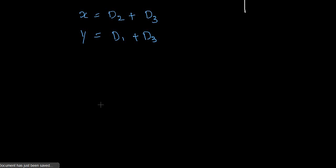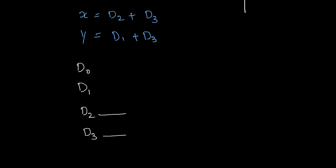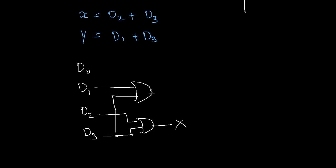I am going to implement this function using logic gates. I write the input data lines d0, d1, d2, and d3. Since x = d2 + d3, we connect d2 and d3 to an OR gate and that produces the output x. For y = d1 + d3, we take d1 and d3 and give them to an OR gate to get y. This represents a 4-to-2 encoder.